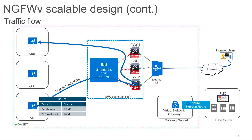Another important traffic flow is east-west traffic — for example, a web server talking to a database. If traffic is initiated within your VNet, that traffic will land on the ILB, which forwards it to the firewall. The firewall applies security policies and forwards that traffic back to the destination subnet.